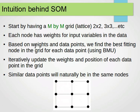Based on the weights and data points in our data, we find the best fitting node in the grid for each data point. Because each node has weights and we have our data points, for each of these data points we need to find the best matching node, the one that best matches that data point using the weights and the values in that data point. We iteratively update the weights and position of each data point in the grid. In the end, similar data points will naturally be in the same nodes.